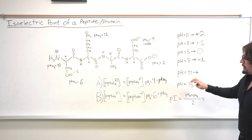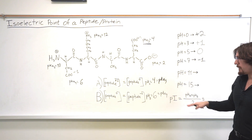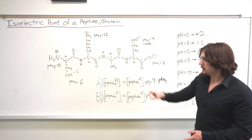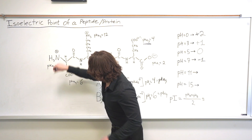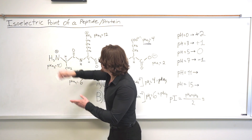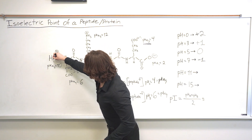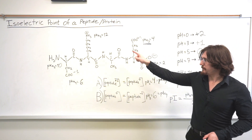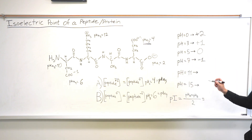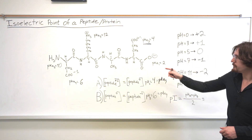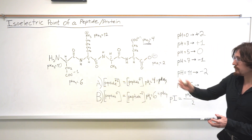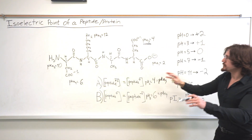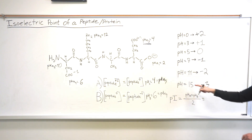Continuing the titration: at pH 11, which is above pKa2 of the amino group (pKa2 = 10), the nitrogen gets deprotonated and goes to its neutral form. We lose that positive charge, leaving three negative charges and one positive charge — so the peptide is now -2. Then if we increase the pH above pKa5, that lysine side chain group gets deprotonated too, leaving no positive charges and three negative charges — an overall net charge of -3.